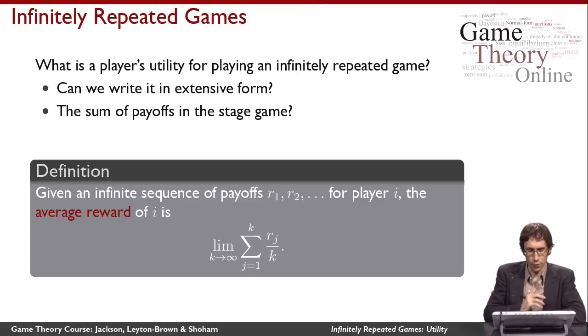And then for the rest of time after that, I get some good payoff, let's say one unit of utility. Then the limit of the means would be one. Because the negative payoff that I got at the beginning was only for a finite amount of time. And it washes out in the average if I go long enough out into the future.